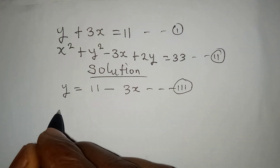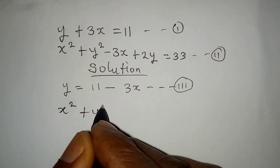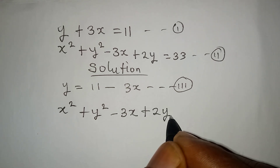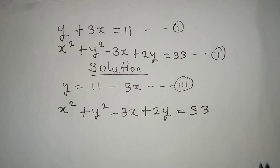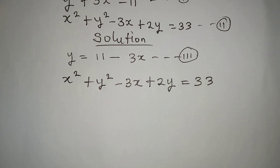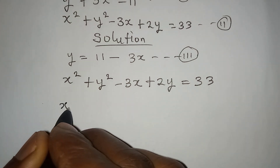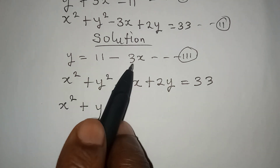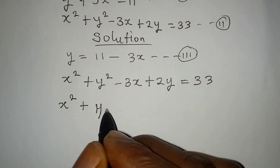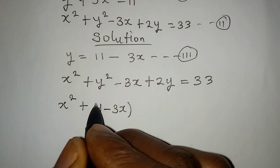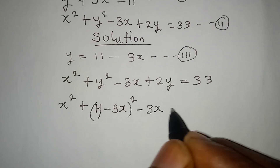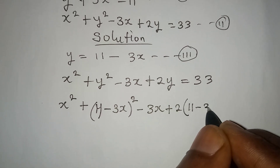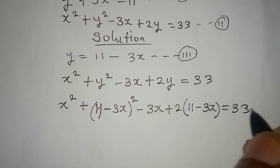Copy equation 2 which is x squared plus y squared minus 3x plus 2y equals 33. Now put equation 3 into equation 2 so that in place of y squared we write 11 minus 3x, all squared. Then minus 3x plus 2 times y, which is again 11 minus 3x. This is equal to 33.